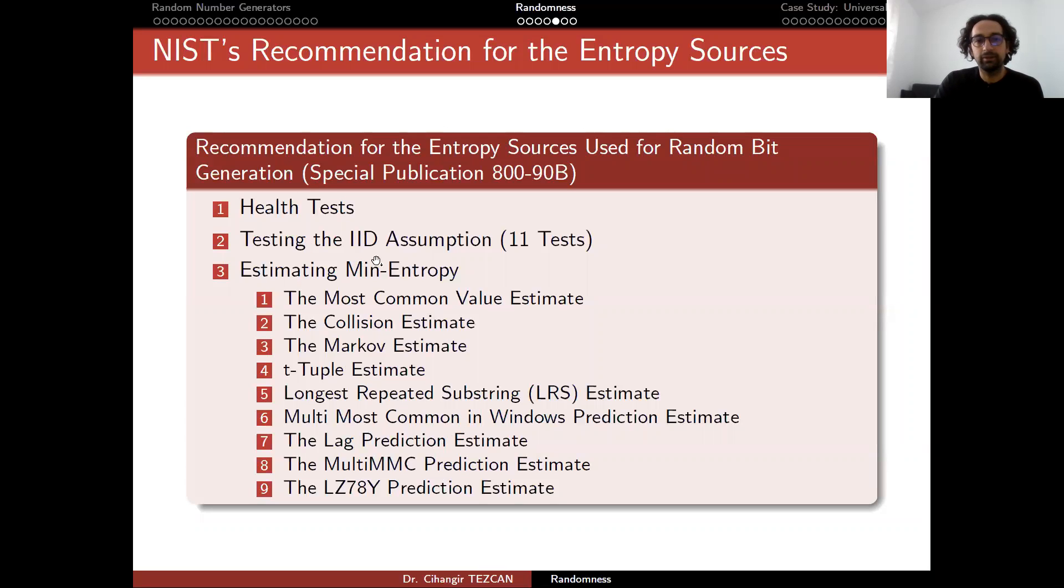But the other thing is that if we were considering the case where the IID assumption failed. But after these 11 tests, if IID assumption is correct, then what you do is just perform this first test and take the result of that as the entropy of the source. So you don't perform the remaining ones. So this is to check the entropy of the source.